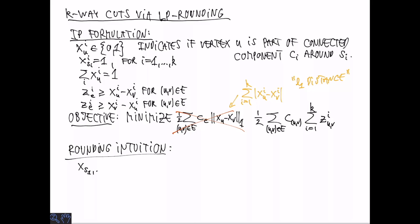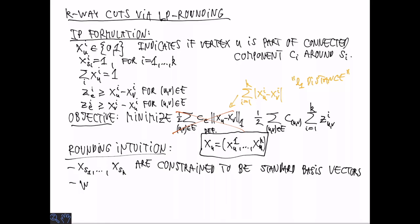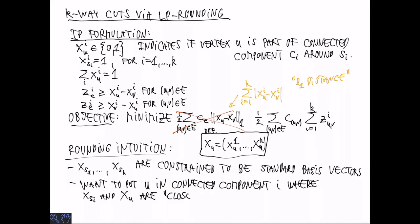How do we round this? We are going to end up with some vectors that make up an optimal linear programming solution. The vectors corresponding to the distinguished vertices must be standard basis vectors because the ith coordinate is 1 and the sum of all coordinates is also 1. Intuitively what we want to do is, if U has a corresponding vector XU, we want to put U in the connected component where XU is close to the vector XSI.